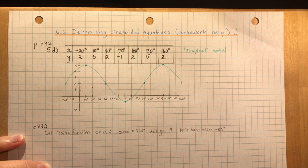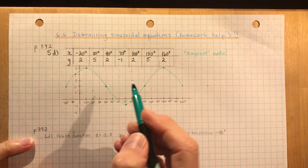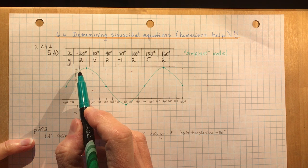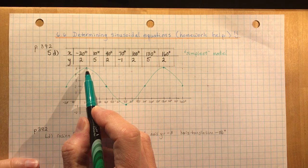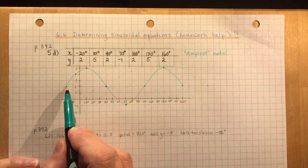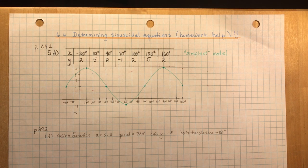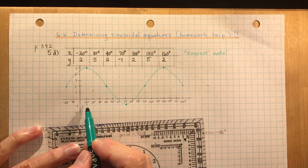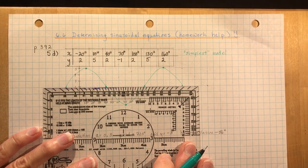The question asks for the simplest model for this sinusoidal function. The simplest model is the one that requires the least amount of movement from the y-axis. For a cosine function I would start at this peak here; for a sine function I would have to go to this point here, because sine starts on the axis. The simplest model is a cosine function with a shift to the right of 10 degrees, so that's minus 10.